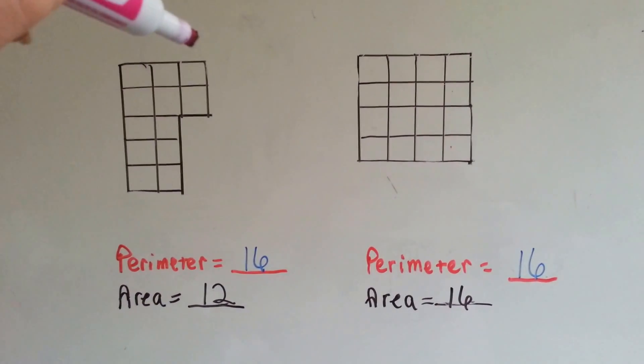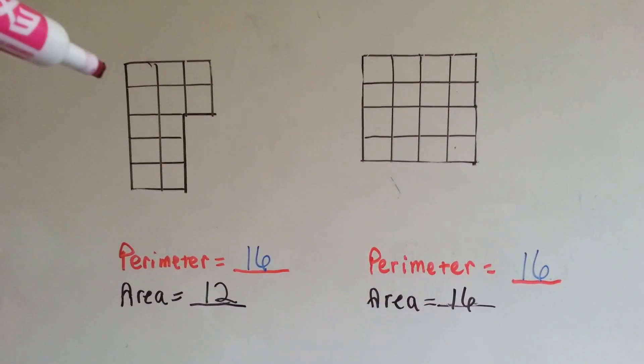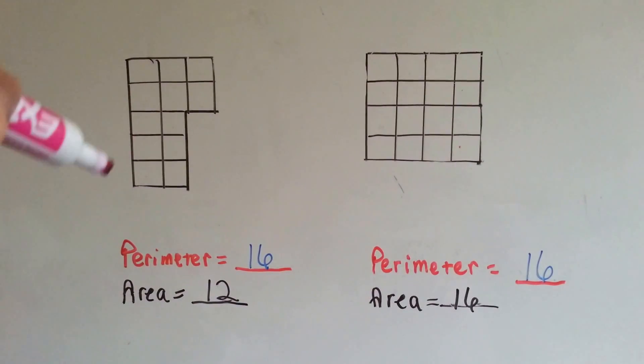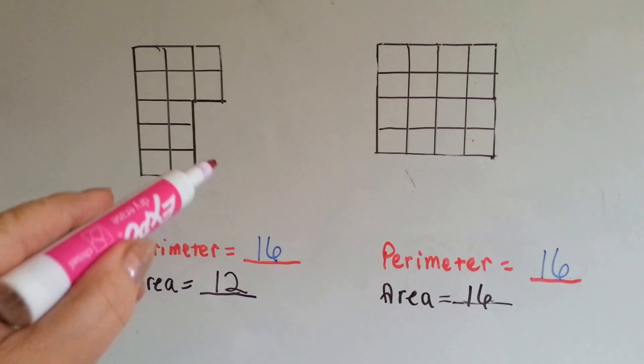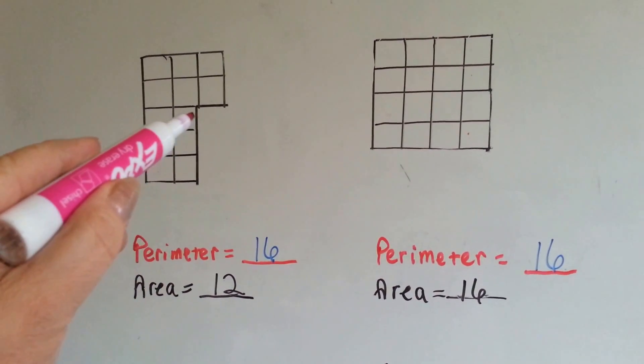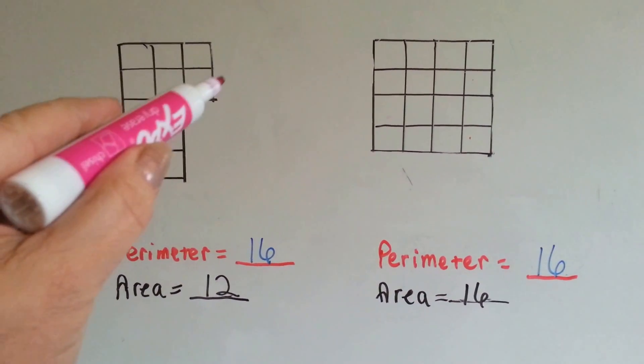Let's count the perimeter on this one. 1, 2, 3, 4, 5, 6, 7, 8, 9, 10, 11, 12, 13, 14, 15, 16.